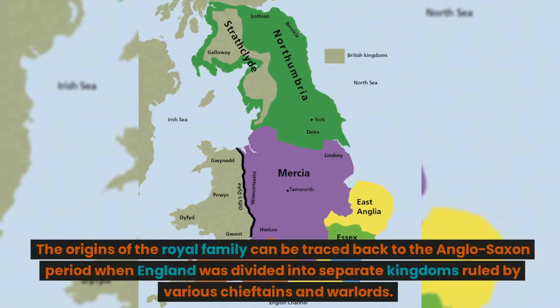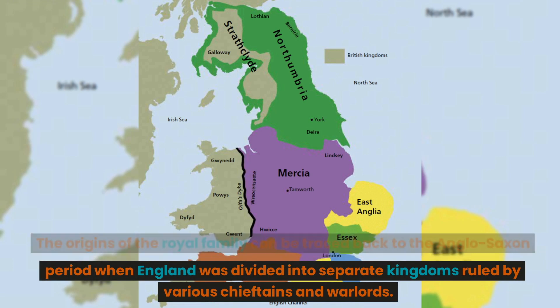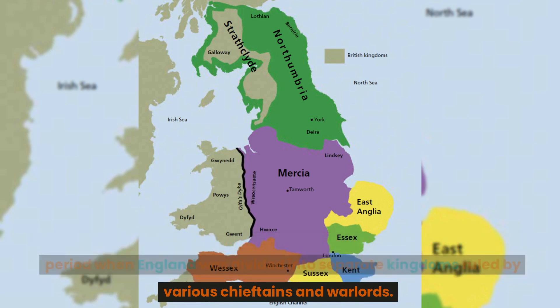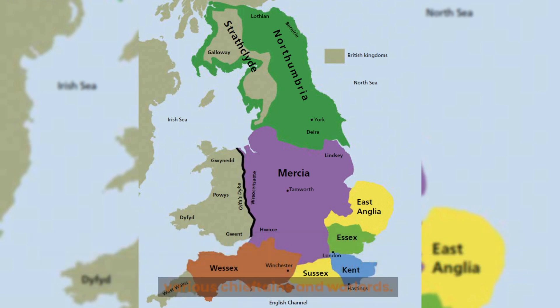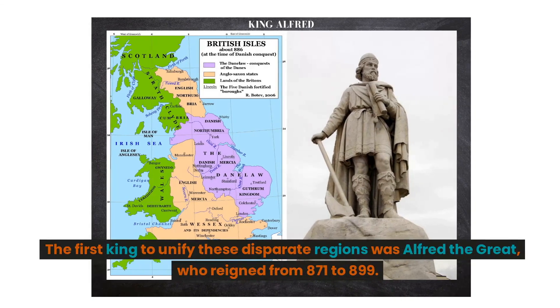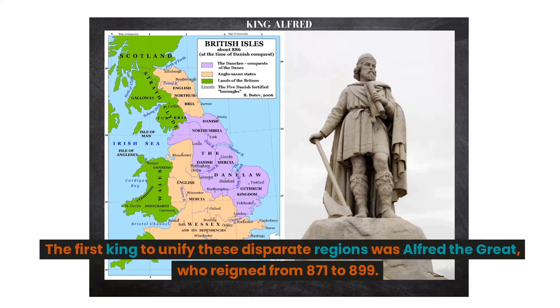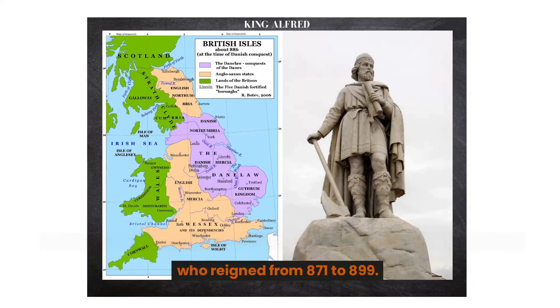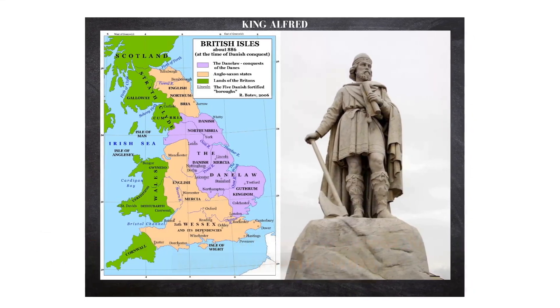The origins of the royal family can be traced back to the Anglo-Saxon period, when England was divided into separate kingdoms ruled by various chieftains and warlords. The first king to unify these disparate regions was Alfred the Great, who reigned from 871 to 899.